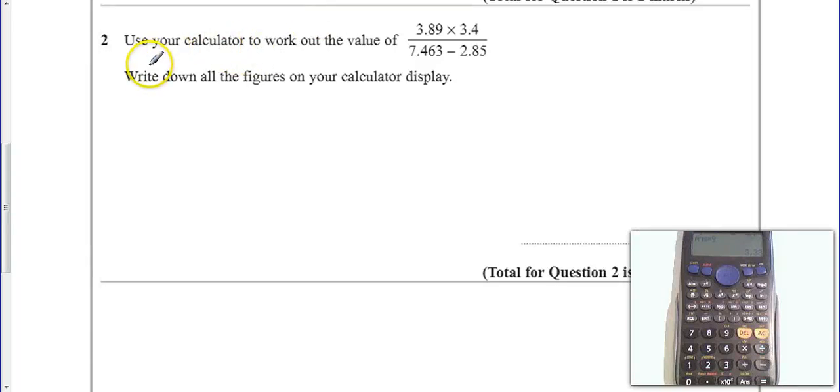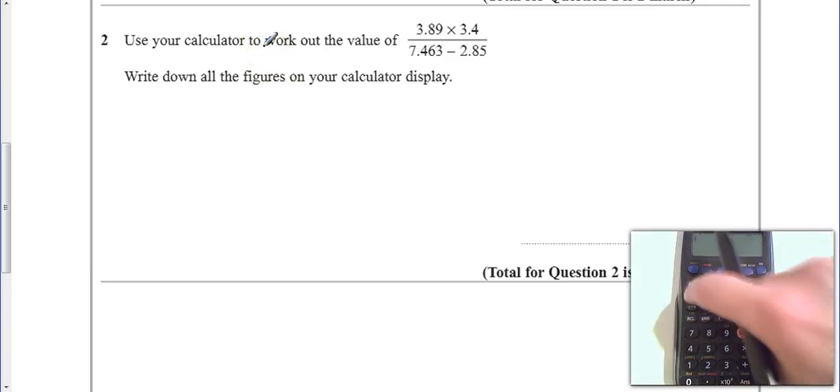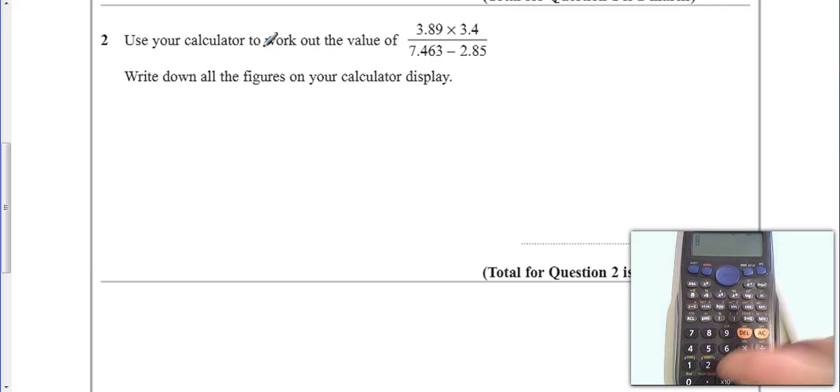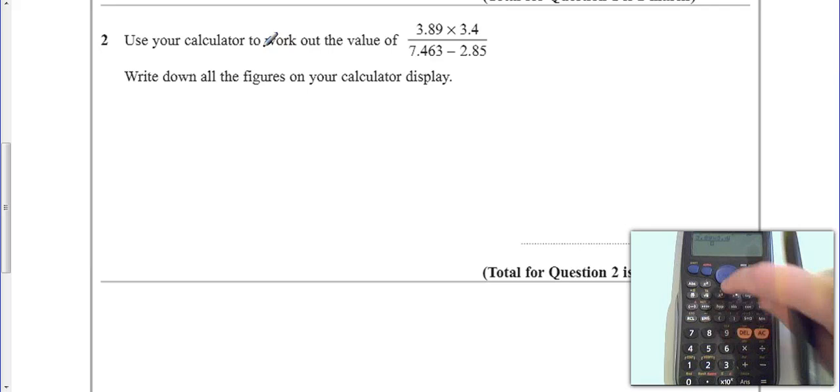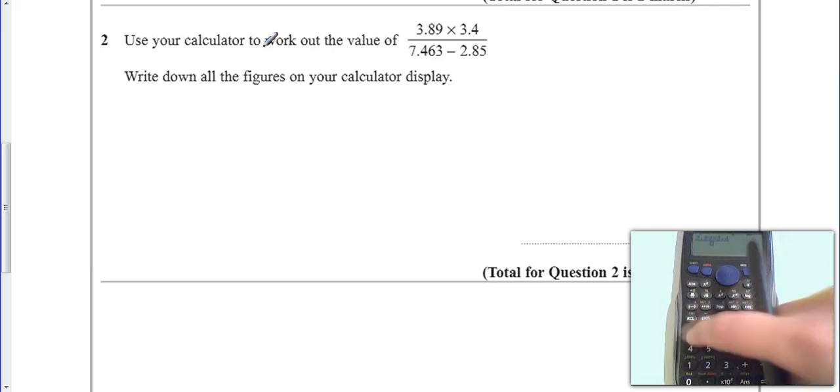Okay, question number two. This is basically some calculator skills. Going over to calculator cam, I'm just going to set up this problem. I can put it all in one, so let's have a fraction: 3.89 times 3.4 over 7.463 minus 2.85.